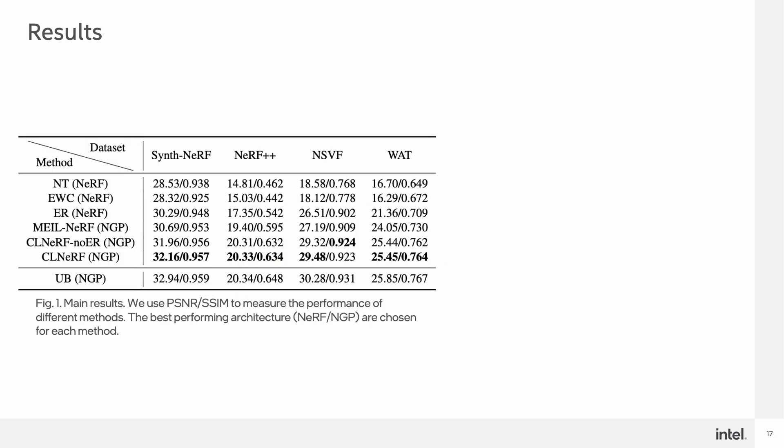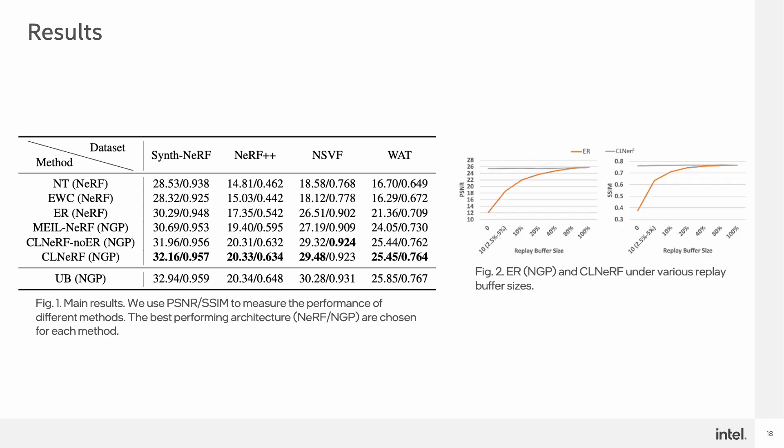Quantitatively, CLNeRV outperforms other baselines on both standard NeRV datasets and the proposed WAT dataset. It provides similar rendering quality as the upper bound model that is trained on all scans at once, but requires much smaller storage since no historical image needs to be stored during continual learning. Comparing to using only experience replay, or ER in short, using generative replay allows CLNeRV to perform well even when no historical image is stored in the replay buffer.